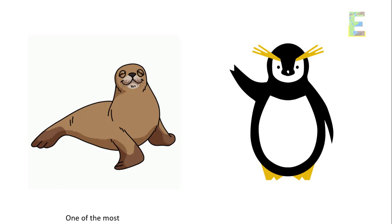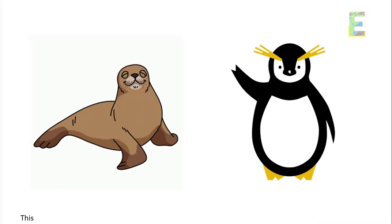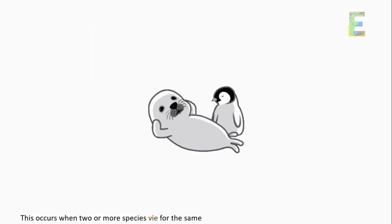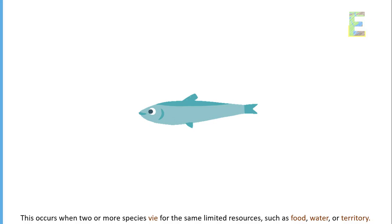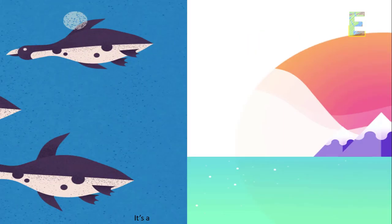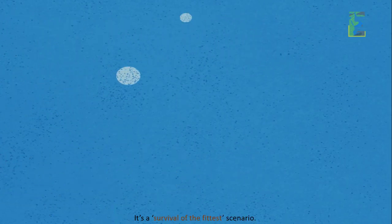Competition. One of the most common forms of non-symbiotic relationships is competition. This occurs when two or more species vie for the same limited resources, such as food, water, or territory. It's a survival of the fittest scenario.